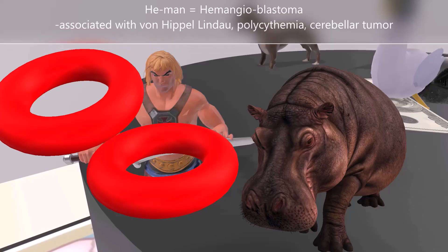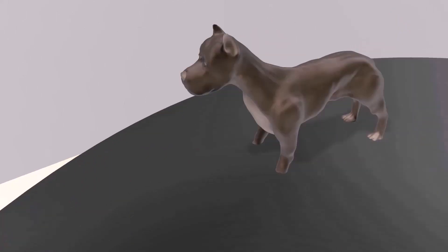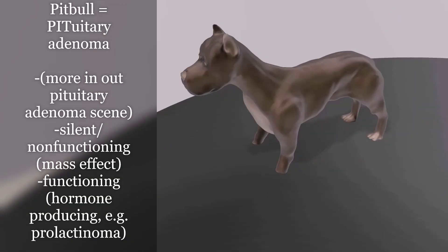Let's move on to pituitary adenoma, represented by the pit bull, reminding us that pituitary adenoma most commonly presents in adults. A pituitary adenoma may be non-functioning (silent) or hyperfunctioning, in which case it is hormone-producing. Non-functional tumors present with mass effect causing bitemporal hemianopsia due to pressure on the optic chiasm, as well as pituitary apoplexy. Prolactinoma classically presents as galactorrhea, amenorrhea, and decreased bone density due to estrogen suppression in women, and decreased libido and infertility in men.